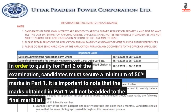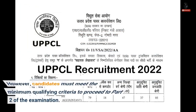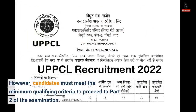In order to qualify for Part 2 of the examination, candidates must secure a minimum of 50% marks in Part 1. It is important to note that the marks obtained in Part 1 will not be added to the final merit list. However, candidates must meet the minimum qualifying criteria to proceed to Part 2 of the examination.